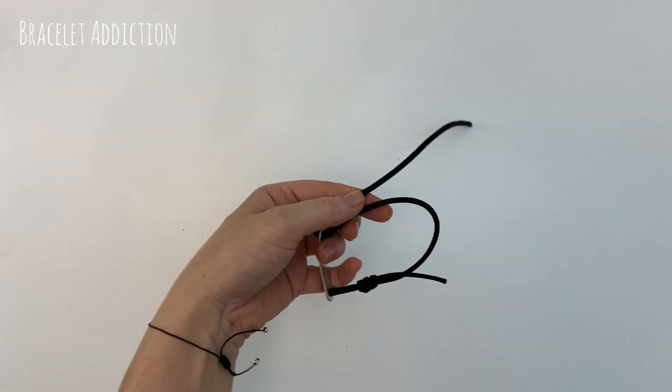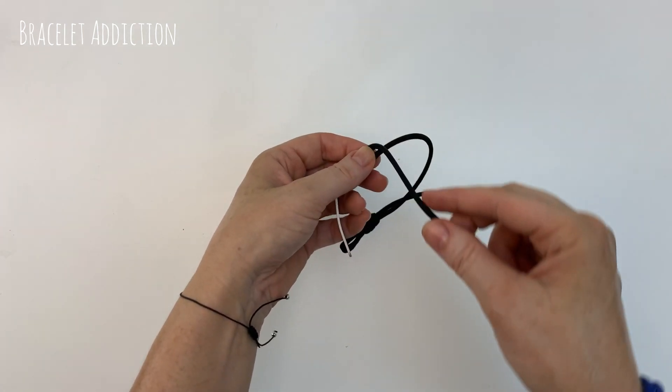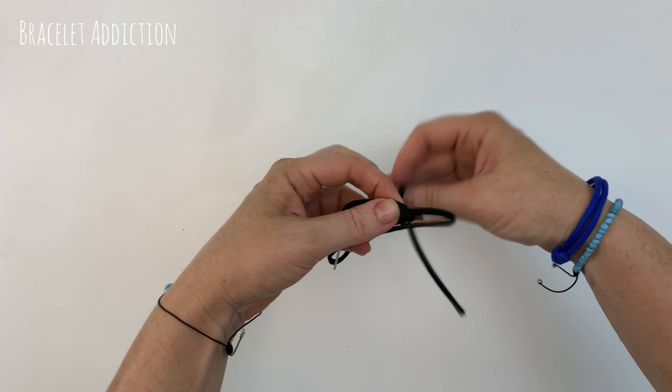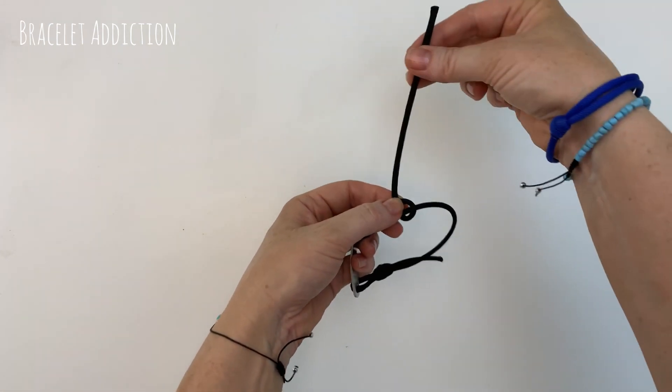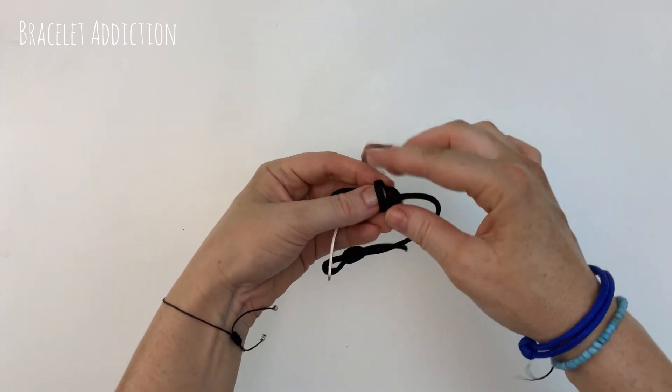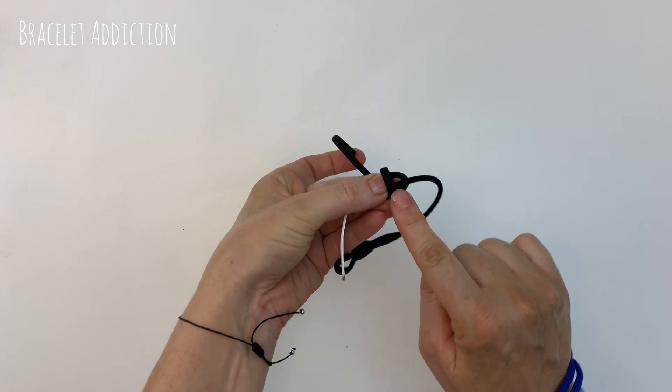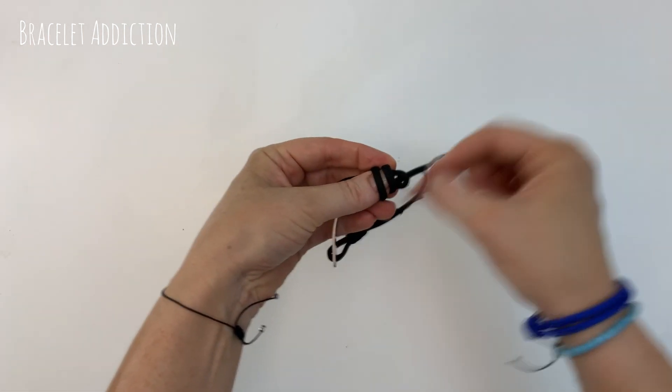And holding it in our left hand with the cord at the back, we bring the cord over the front, down and out the back for our first loop here. And then again over the front, down and out the back for our second loop. And then again for a third loop as well.